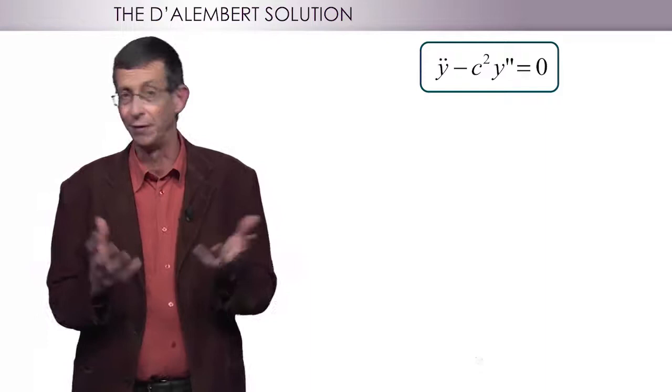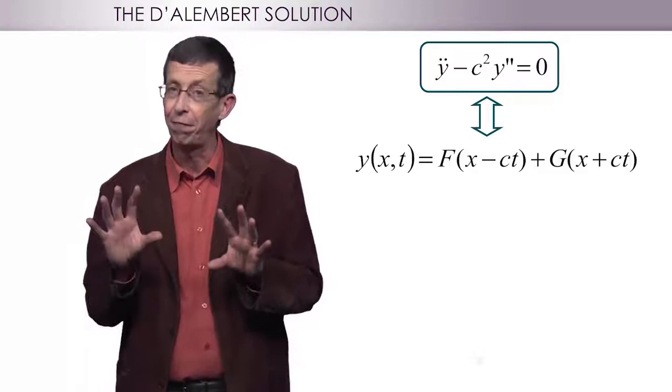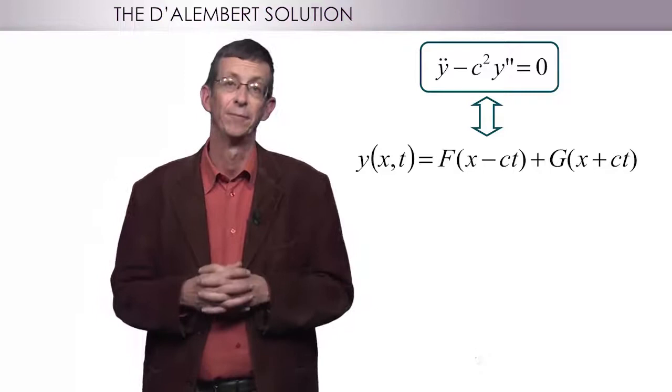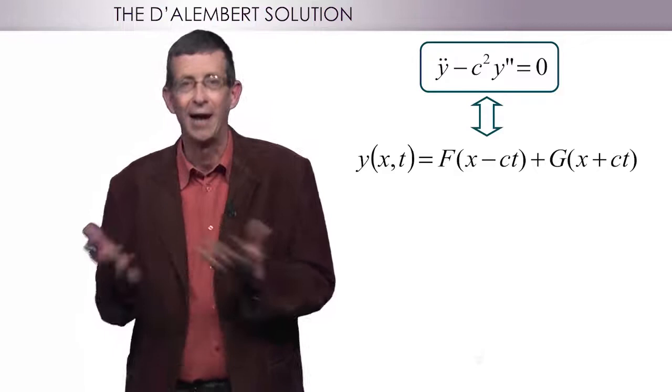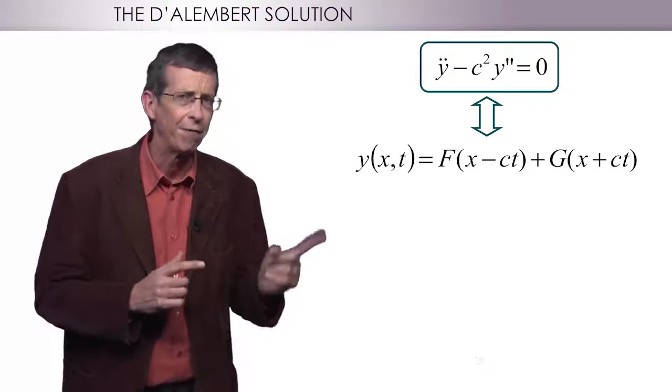We have a very strong result, which is that the solution y of x and t will always be in the form of the sum of two functions, f of x minus ct plus g of x plus ct. You can easily check this yourself by putting y into the equation, or by using x plus ct and x minus ct as new variables. This is much simpler, because f and g are just functions of one variable each.